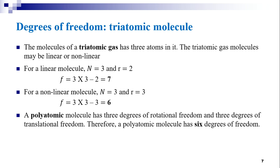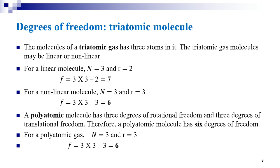A polyatomic molecule has 3 degrees of rotational freedom and 3 degrees of translational freedom. Therefore, a polyatomic molecule has 6 degrees of freedom. For a polyatomic gas molecule, N = 3 and R = 3, giving F = 3 × 3 − 3 = 6.